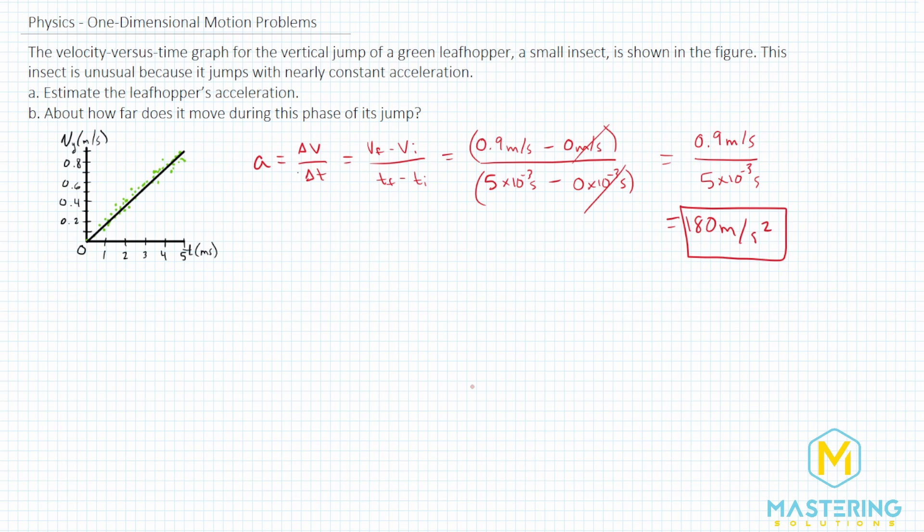And now if the question asks to put that into scientific notation, we can do that pretty quickly. We're going to move the decimal place 1, 2. So that would be 1.8. And then it's times 10 to the 2 meters per second squared. So if they ask in scientific notation, that is what you would put in there. So now let's move on to part B. This was A.